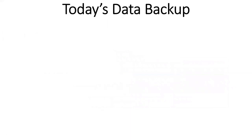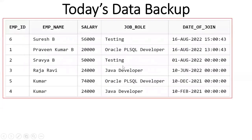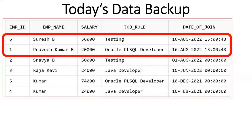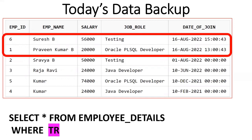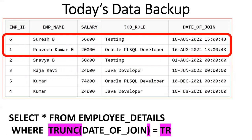Now I want to back up today's records. Looking at the table, Suresh B and Praveen Kumar B are the two records joined today. If I put SELECT * FROM employee_details, it will project all six records, but I want only today's two records. To get only today's records, we use the TRUNC(sysdate) concept: WHERE TRUNC(date_of_joining) = TRUNC(sysdate). SYSDATE gives date plus timestamp, but using TRUNC eliminates the timestamp, giving only the date — so it picks the two records.